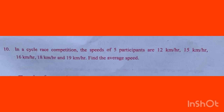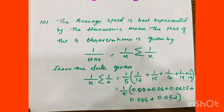In a cycle race competition, the speeds of 5 participants are 12 km/h, 15 km/h, 16 km/h, 18 km/h, and 19 km/h. Find the average speed. The harmonic mean (HM) is the best representation of average speed. The formula is: 1 divided by HM equals 1 divided by N times sigma (1/X).